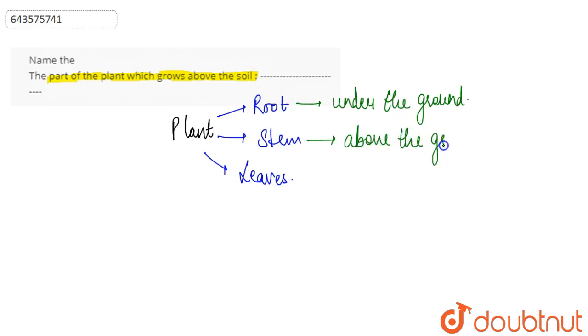The stem grows above the ground, or we can say above the soil, which basically provides protection and support to the plant. On the stem, we usually get to see the green-colored leaves at the top. So basically, the part of the plant which grows above the soil is simply